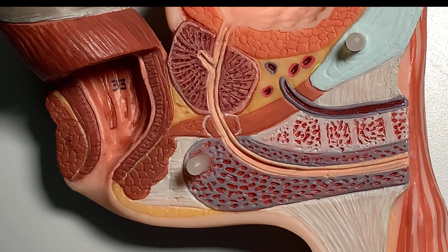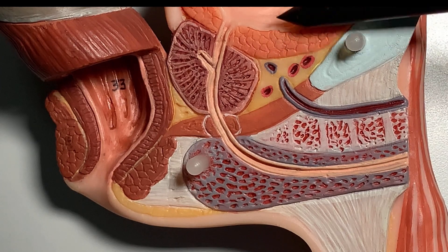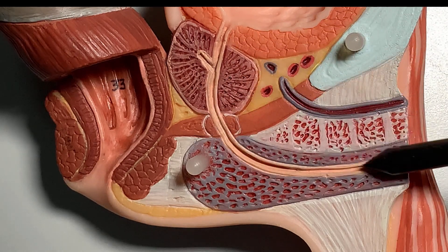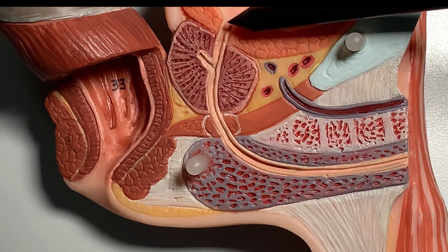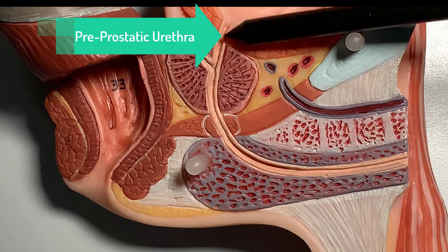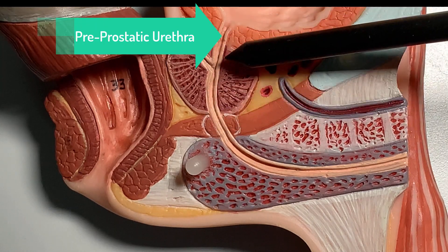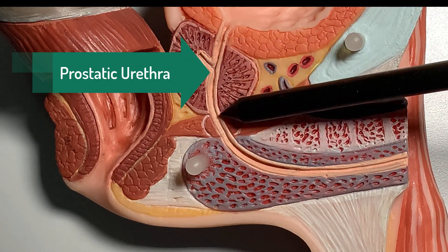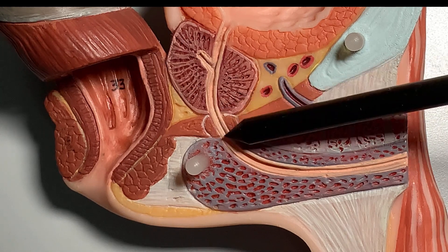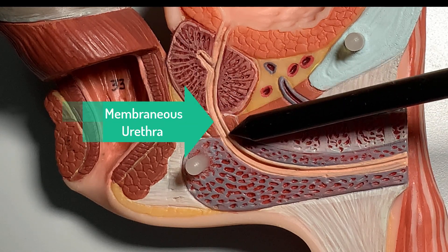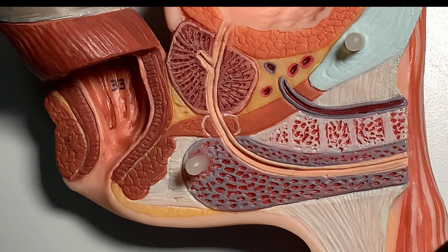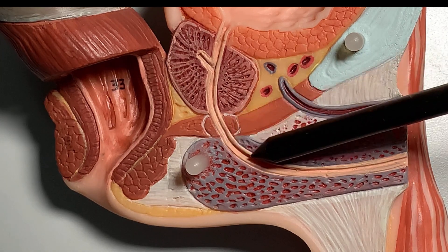Now I am using another model to make things clearer, and this is from another view. Overall, this is the urinary bladder. We are looking more clearly at the urethra. At the bladder neck is the pre-prostatic urethra, within the prostate gland is the prostatic urethra, and when it passes through this muscle this part is the membranous urethra. Beyond that, the whole length going horizontally and then bending downwards is the spongy urethra.